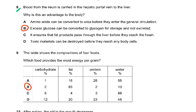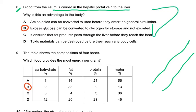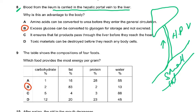Question 8: blood from the ileum is carried in the hepatic portal vein to the liver. The statement that amino acids can be converted to urea before entering general circulation is wrong — only excess amino acids are deaminated, not those going straight from the intestine to the liver. They must be used by the body first, and only the excess are deaminated.